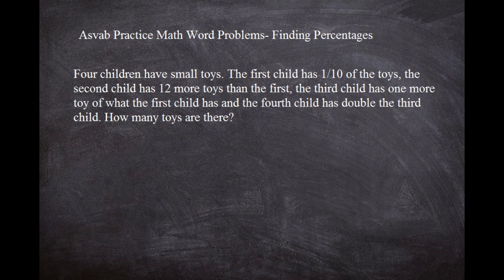It says four children have small toys. So we're going to picture four kids playing with their toys. The first child has one tenth of the toys — so that first kid has a small amount, only one tenth. The second child has 12 more toys than the first, so the second kid is going to have way more toys. The third child has one more toy than what the first child has. And the fourth child has double the third child. How many toys are there?